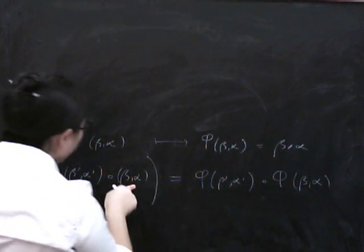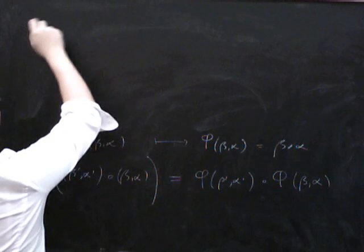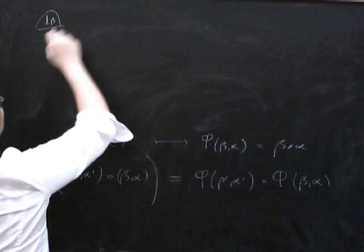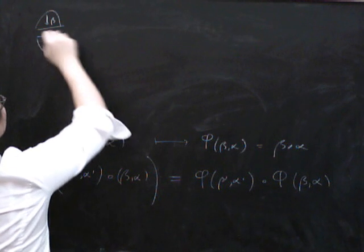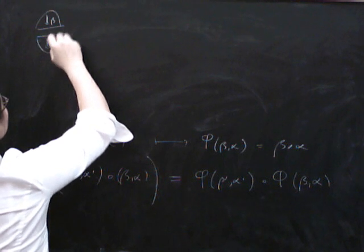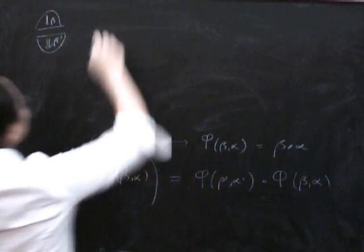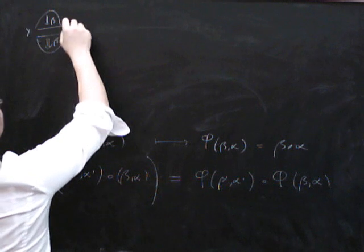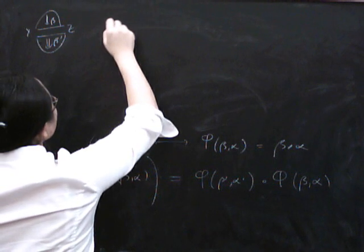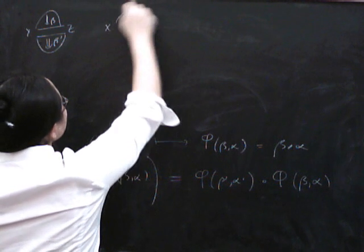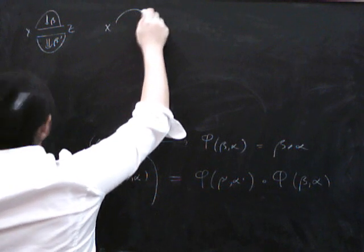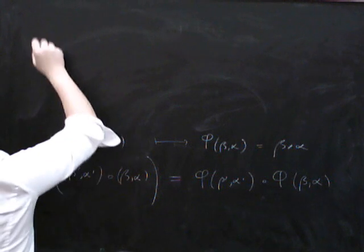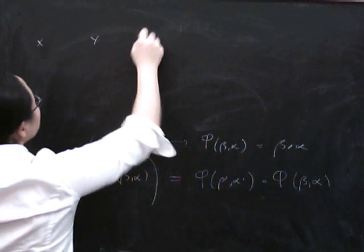So if these are going to be composable, what that means is that beta goes like this, and beta prime has to be composable with it. And then this is going to go from y to z. We've also got to have from x to y something that goes from... I think I've written this the unhelpful way around, I'm going to write it the helpful way around. We've got three objects: x, y, and z.